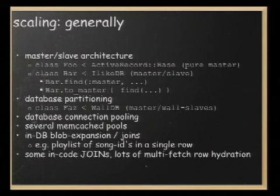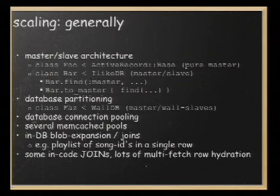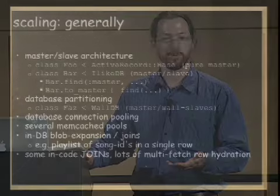I'll talk about a couple of these. Some will make sense to Ruby developers; they're a bit custom to us, and things we hope to push back into Rails. We have this way to specify that a model — a piece of code representing back-end database schema — runs purely from the master database, meaning reads and writes from this model occur only to the master, with or without a memcache layer between us and the database.